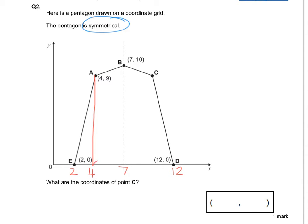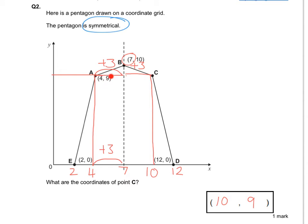To jump up the number line I'm going to add 3. So if I know the gap there is +3, then the gap on the other side is +3 as well. Because that's 7, the x-coordinate is going to have to be 10. And because I know that the y-coordinate here is 9, my coordinates are going to be (10, 9) — we take the 10 from the x-axis and the 9 from the y-axis.